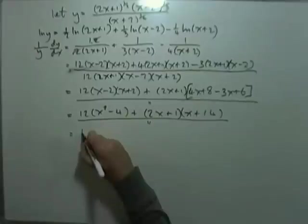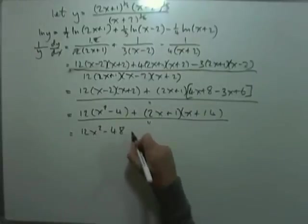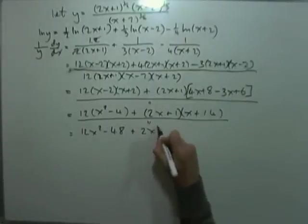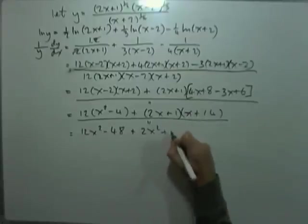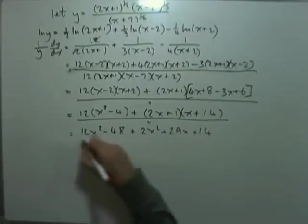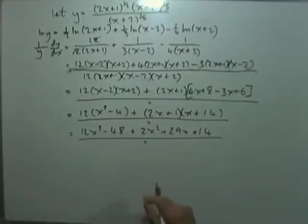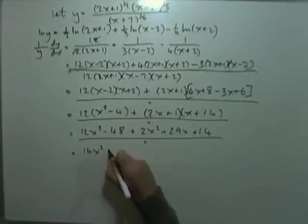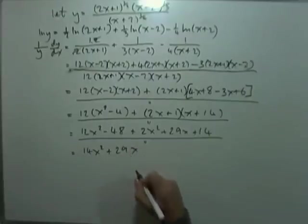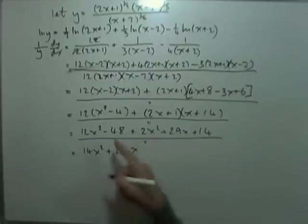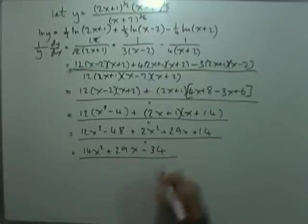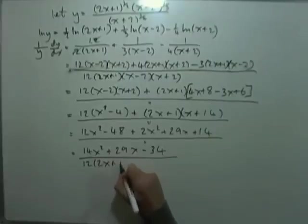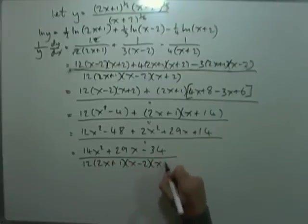Multiplying everything out: 12(x² − 4) gives 12x² − 48, plus (2x + 1)(x + 14) gives 2x² + 29x + 14. Collecting like terms: 14x² + 29x − 34, all over 12(2x + 1)(x − 2)(x + 2).